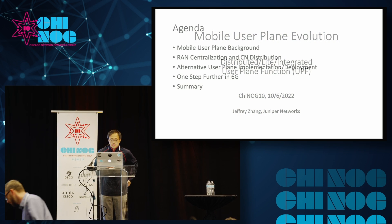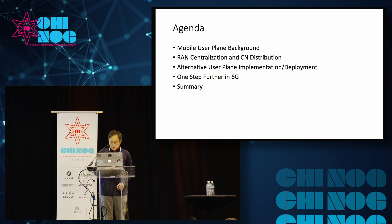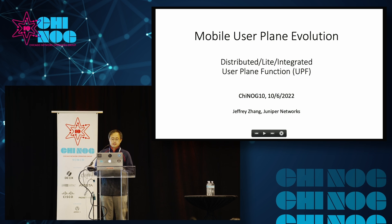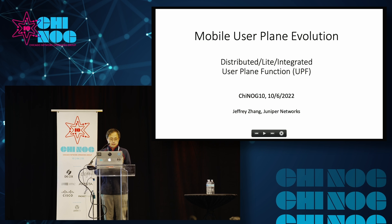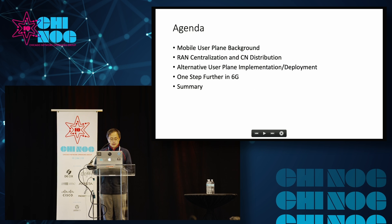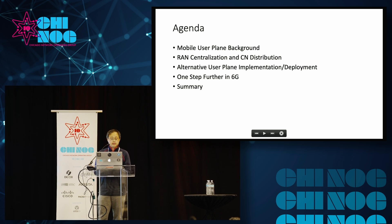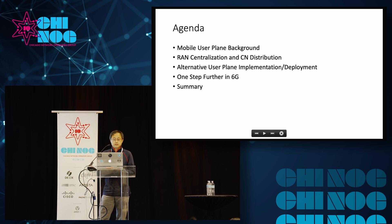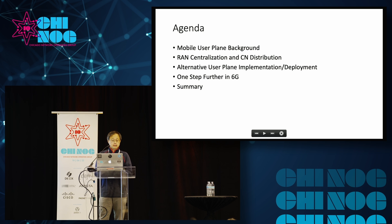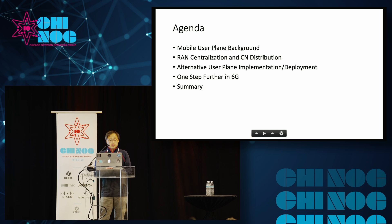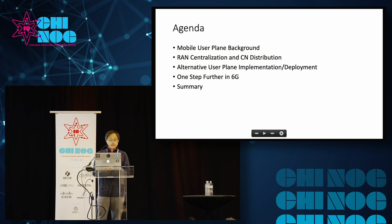I'm going to talk about the user plane evolution, focusing on distributed, light, and integrated UPF. As we go along with the presentation, you'll become clear on what those terms mean. I will first give a quick background on mobile user plane, talk about the trend of RAN centralization and core network distribution, alternative user plane implementations and deployments that some vendors and operators are promoting, and some thoughts on 6G on how to evolve the mobile user plane.